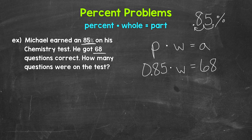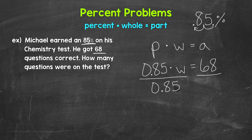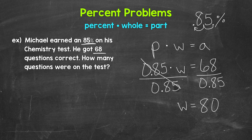We need to isolate the variable W. W is being multiplied by 0.85, so we use the inverse operation — division. Divide the left side of the equation by 0.85. Whatever we do to one side of an equation, we must do to the other, so divide the right side by 0.85 as well. The 0.85s cancel on the left, isolating W. On the right, 68 divided by 0.85 gives us 80. So W, the whole, equals 80.